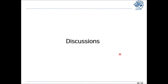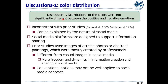From the results, we want to discuss a few points. The first is about color distribution. Our study shows that the distribution of colors was not significantly different between two emotion groups, which is somewhat inconsistent with prior studies. We think this can be explained by the nature of social media: platforms are designed to support information sharing, and posts come from individual users reflecting various aspects of life. Prior studies used artistic photos or abstract paintings created by professionals, which are quite different from casual social media images. Thus, the conventional notion of colors may not work well in a social media context.